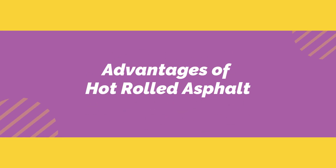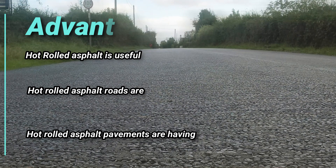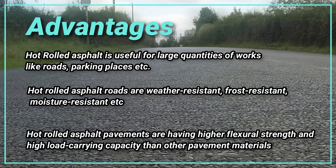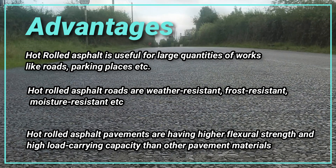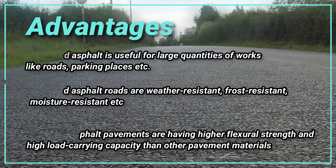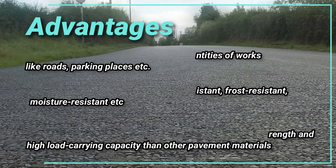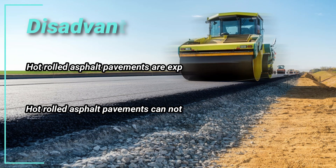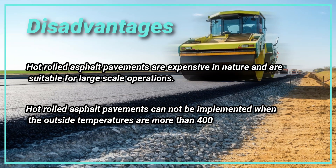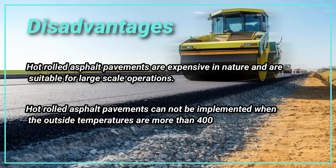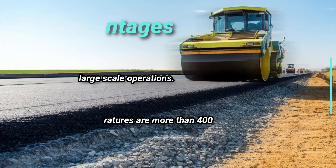Advantages of hot rolled asphalt: it is useful for large quantities of work like roads and parking places. Hot rolled asphalt roads are weather-resistant, frost-resistant, and moisture-resistant. Hot rolled asphalt pavements have higher flexural strength and high load-carrying capacity than other pavement materials. Disadvantages: hot rolled asphalt pavements are expensive and suitable only for large-scale operations. They cannot be implemented when outside temperatures are above 40°C.